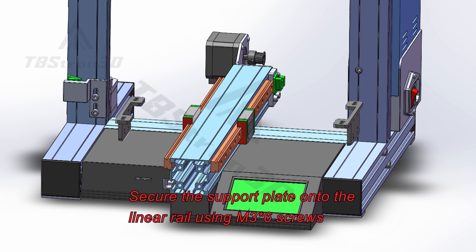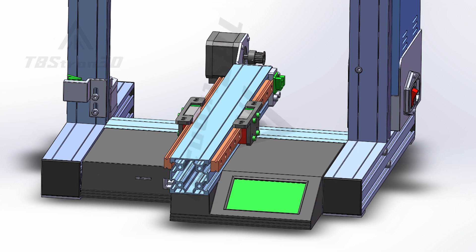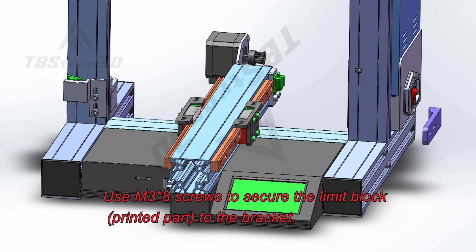Secure the support plate onto the linear rail using M36 screws. Use M38 screws to secure the limit block printed part to the bracket.